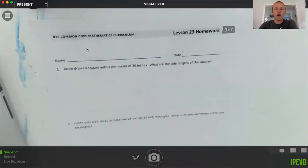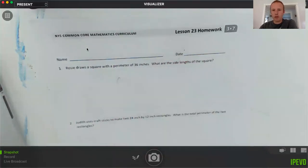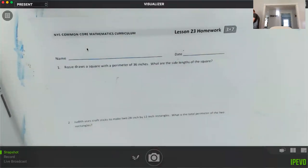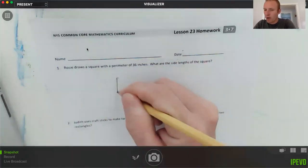Alright, Rosie draws a square with the perimeter of 36 inches. What is the side length, or what are the side lengths of the square? My pencil broke, let me get another one. Alright, here we go. We'll draw a square.